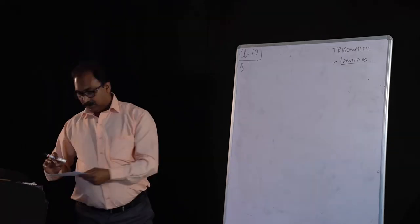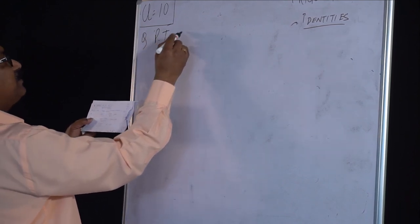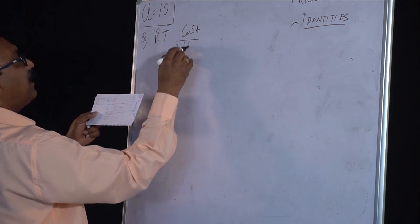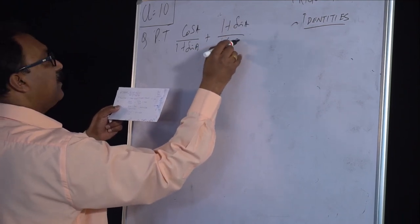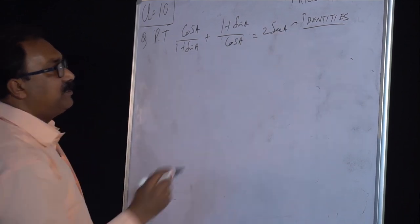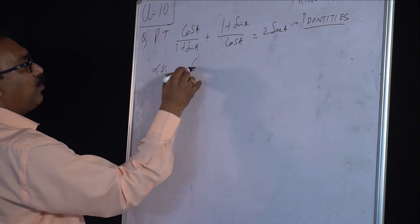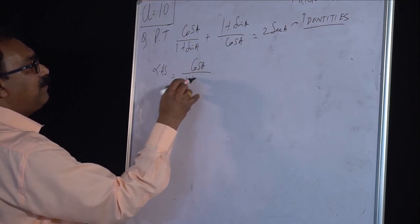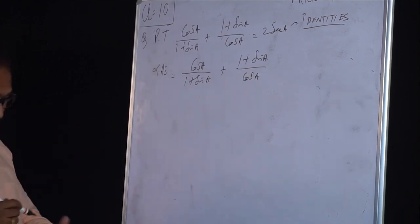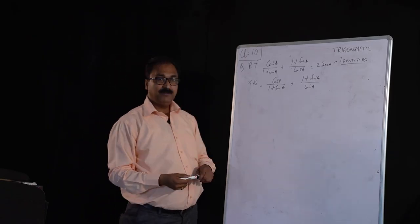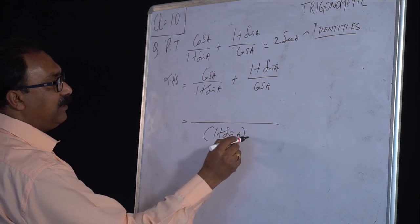Now we come to the next question. This one also: prove that cos A divided by (1 plus sin A), plus (1 plus sin A) divided by cos A, is equal to 2 sec A. This is one type of question which usually comes in board exams. So what we will do — take LHS: cos A by (1 plus sin A) plus (1 plus sin A) by cos A. We already have sine and cos, so we directly take LCM: (1 plus sin A) into cos A.